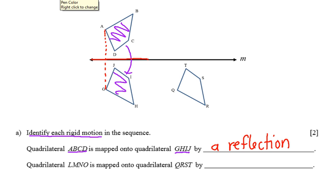Next, quadrilateral LMNO, which is nowhere to be found. Must be a typo. I believe they mean GHIJ. So that quadrilateral is mapped onto QRST by something.